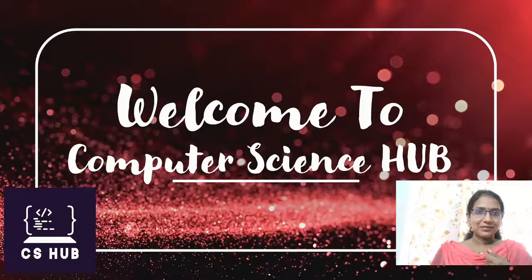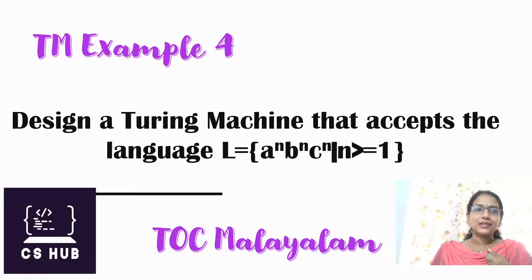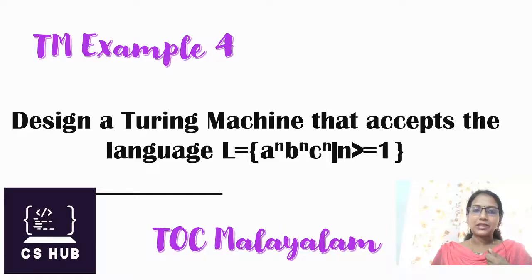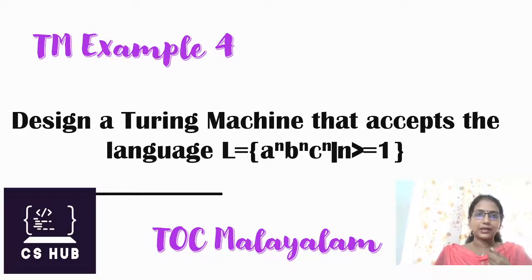Hello everyone, welcome to Computer Science Hub. We are at the last example of Turing machine. Our subject is TOC, and this is our question: design a Turing machine that accepts the language L = a^n b^n c^n where n ≥ 1, which means equal number of a's followed by equal number of b's followed by equal number of c's. The minimum string is abc.